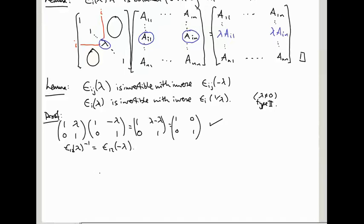So in this case E_1 2 lambda inverse is E_1 2 minus lambda, and this is E_1 lambda, let's try multiplying it by E_1 1 over lambda. We're going to get lambda 0 0 1, 1 over lambda 0 0 1, the lambda and the 1 over lambda give us 1, the 1 and the 1 give us a 1, and everything else is 0.